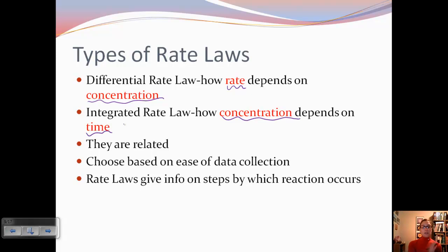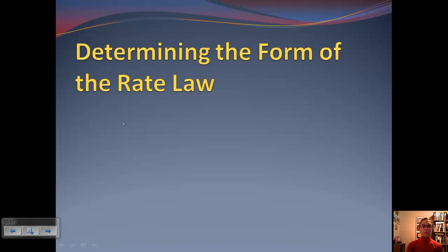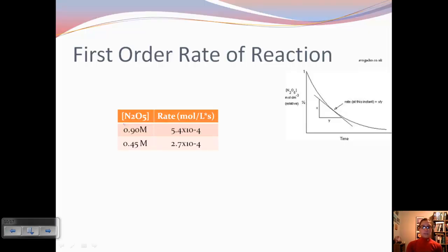These rate laws give information on the steps by which the reaction occurs. We said it was really important to know the steps by which the reaction occurred because that would help us determine how things react and maybe take advantage of certain steps. So this is a way to get that information. Now let's determine the form of the rate law — let's look at a first-order rate of reaction.